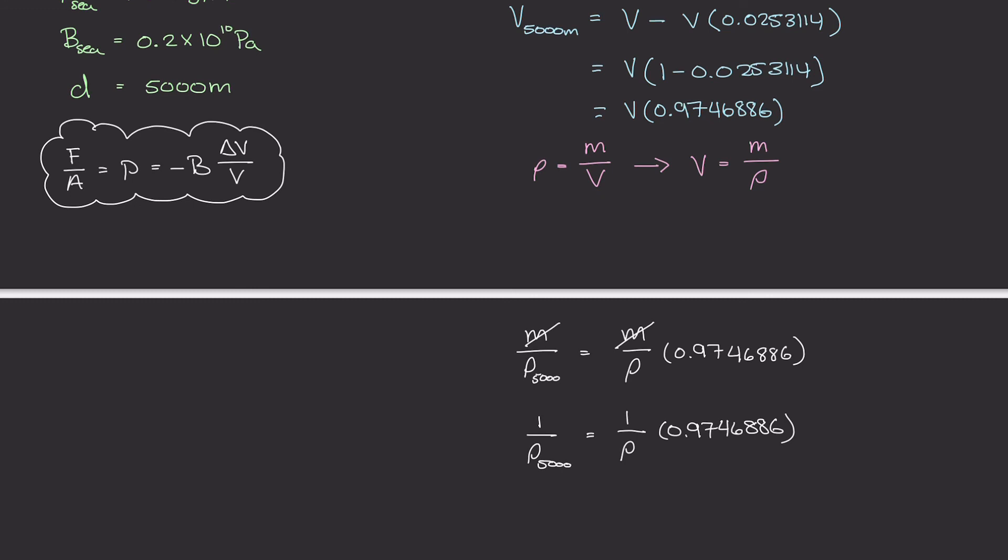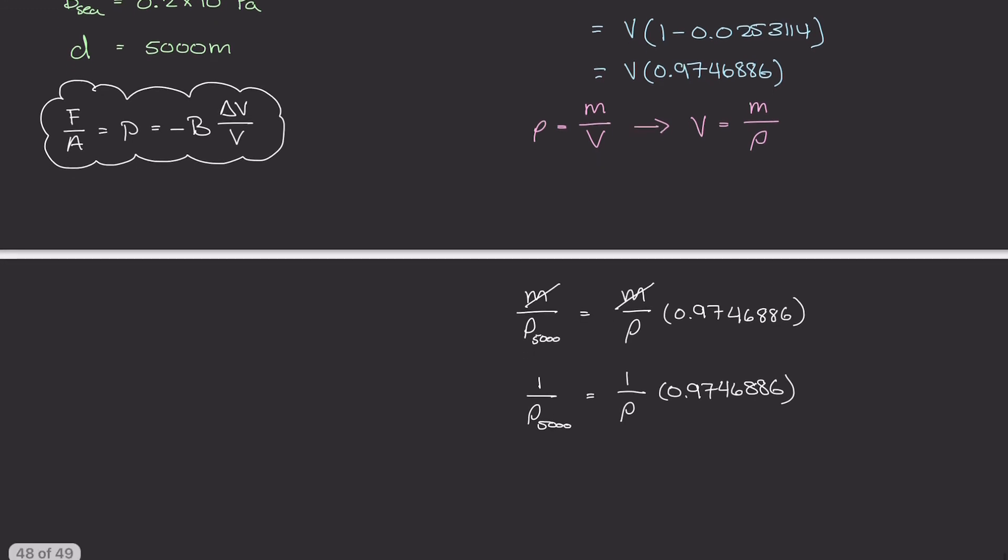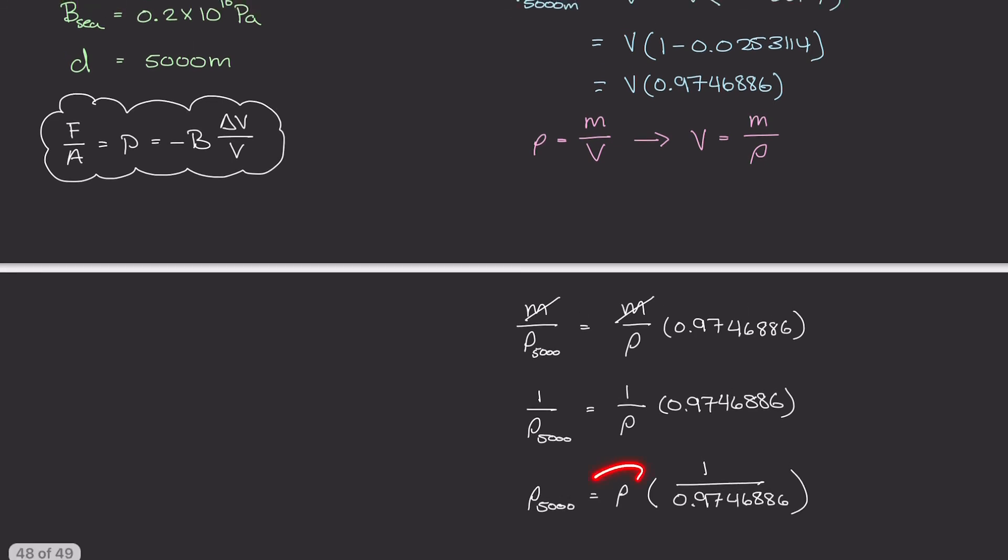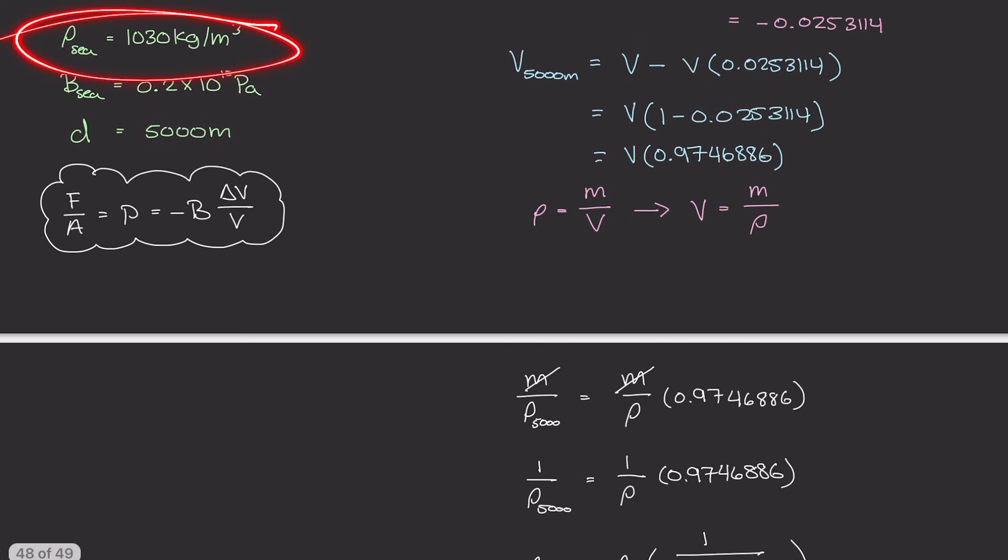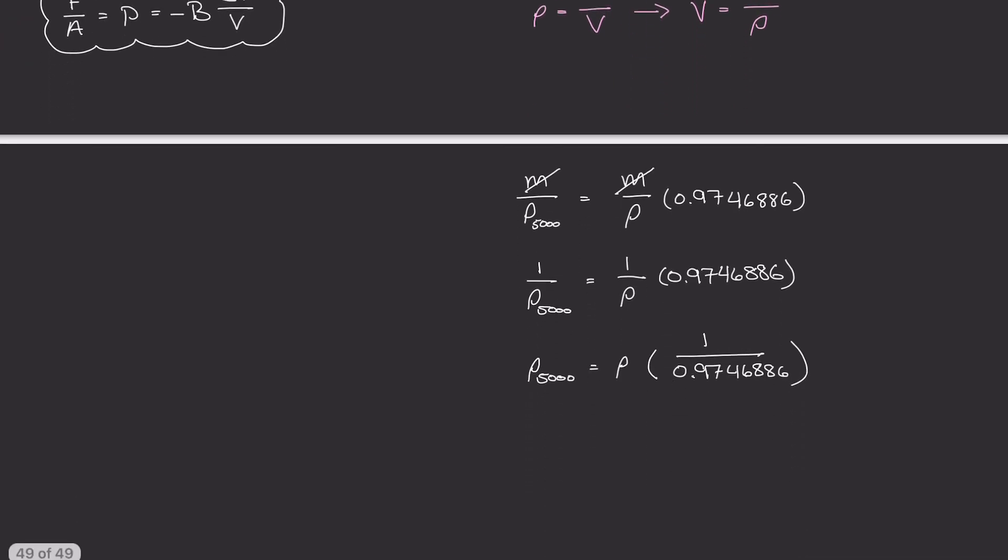So what I'm really left with is 1 over mass density at 5000 meters is equal to 1 over rho times that value here. Now if I take the reciprocal of both sides of this equation, I get mass density at 5000 is equal to the mass density times 1 over 0.97. And if we know that the original mass density here is this 1030 kilograms per meter cubed, I can plug that in here for rho. And I get this term right here. And if I plug this into my calculator, I get a mass density of 1056.75 kilograms per meter cubed.